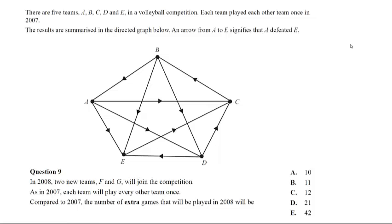So in 2007 we had a five vertices complete graph. Now the question actually asks in 2008 two teams F and G will join the competition. So in 2007 we had a complete graph of five vertices, in 2008 now we will have a complete graph of seven vertices. And so the question is asking us compared to 2007, the number of extra games that will be played in 2008 will be.